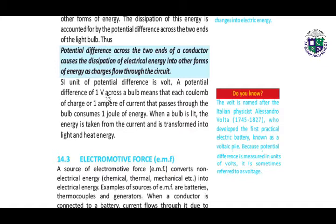A potential difference of 1 volt across a bulb means that each coulomb of charge, or 1 ampere of current, that passes through the bulb consumes 1 joule of energy.